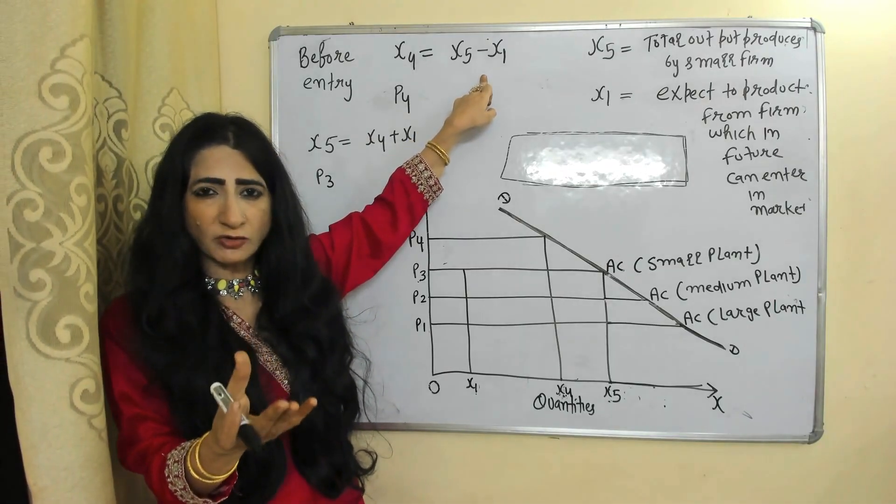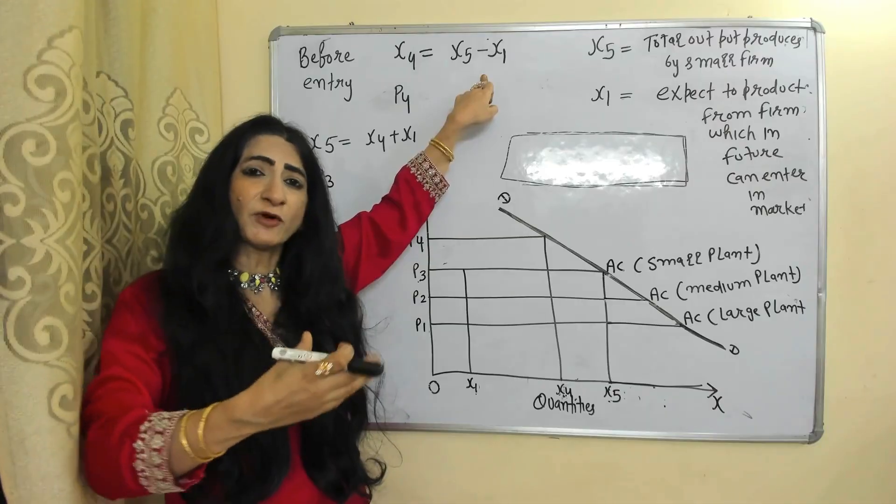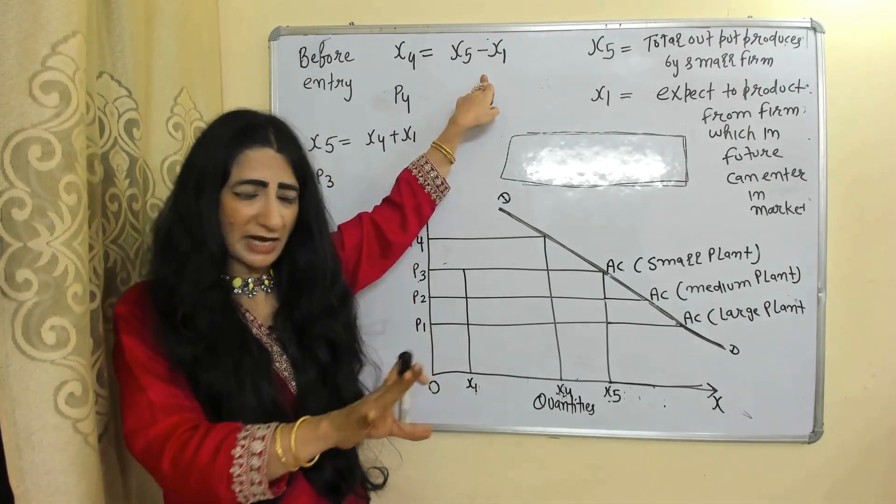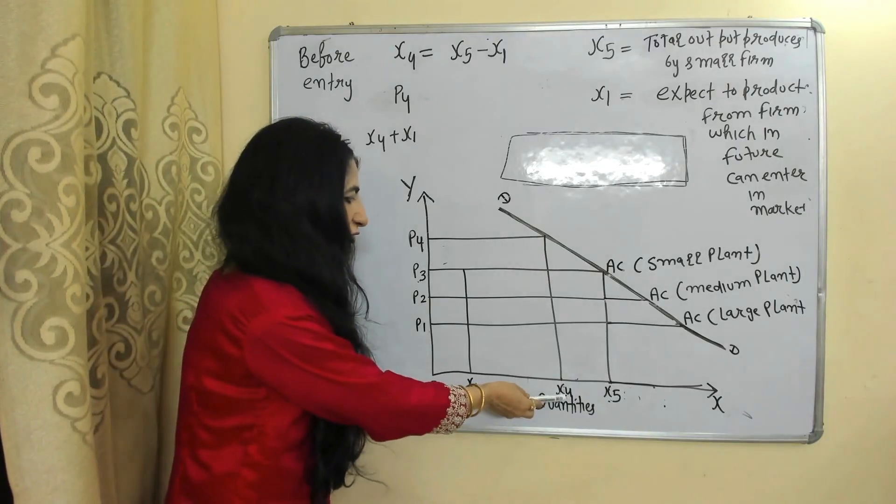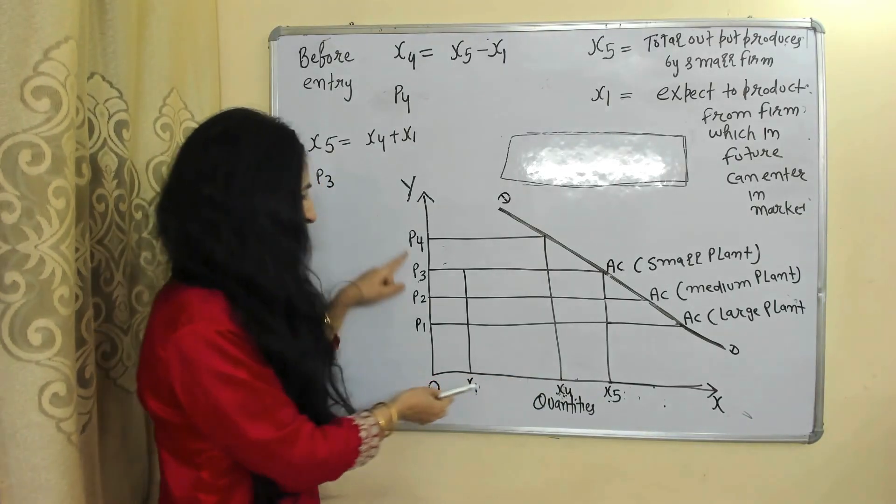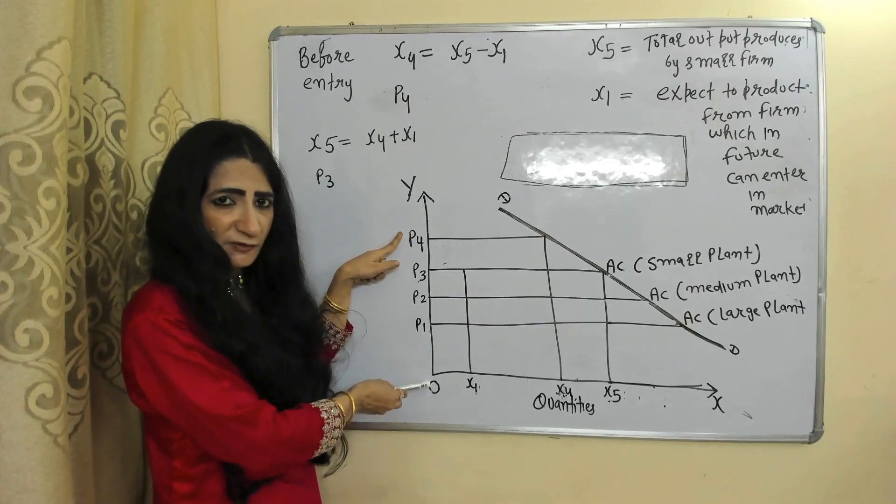X5 total output which all small firms can produce. X1 means output we expect from the firm which in the future can enter the market. So initial output is OX4 and initial price is OP4.